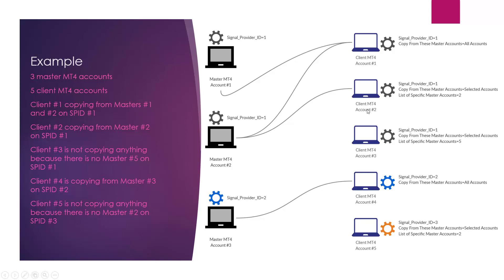Client account number two is set to use the same SPID 1, but it is set to copy trades only from selected accounts — specifically account number two. So it will ignore all other MetaTrader accounts in SPID 1 and follow only master account number two.